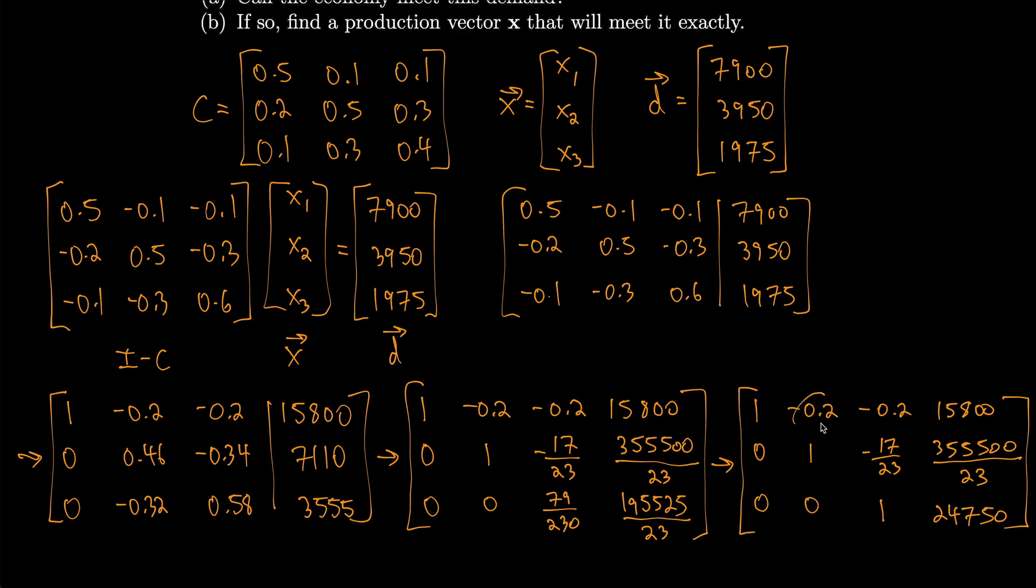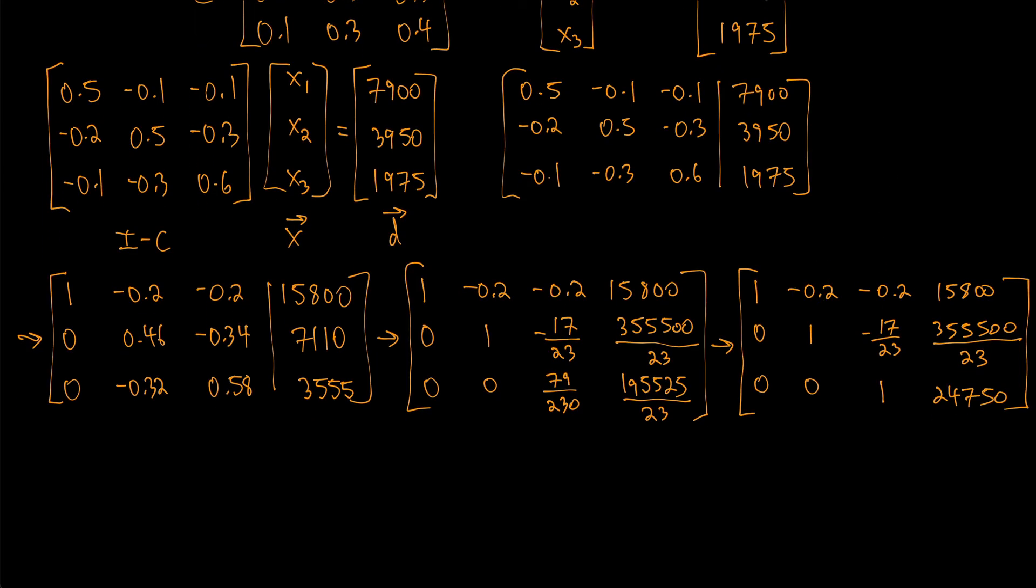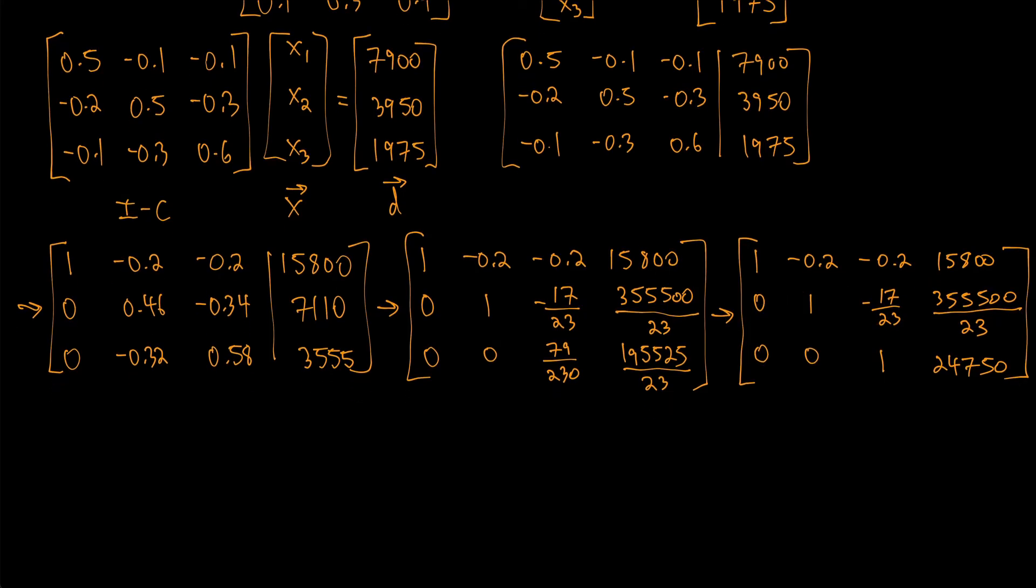Now we just need to get zeros above, and we'll be in reduced row echelon form. Let's get a zero here by adding a suitable multiple of my second row. I'll get 1, 0, -8/23, 434,500/23; 0, 1, -17/23, 35,500/23; and 0, 0, 1, 24,750.